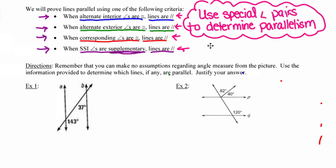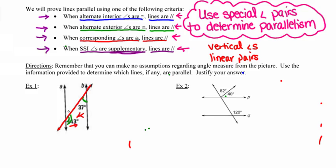Other situations that might be helpful: look for vertical angles and look for linear pairs. Those might be helpful as well. In the first situation, we've got this angle here which is 143, and this angle here which is 37. Notice that they're on the same side of the transversal — they're both below the transversal but inside the parallel lines. So these two are same-side interior angles.